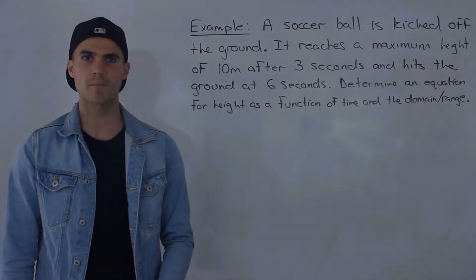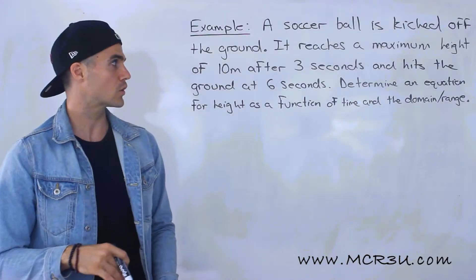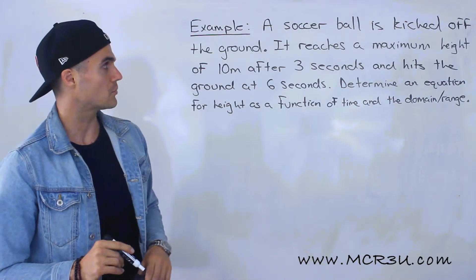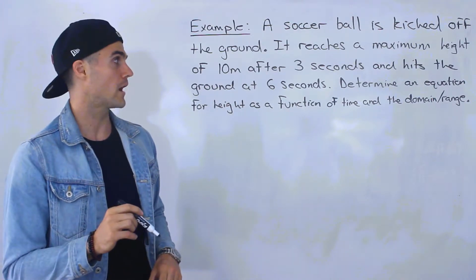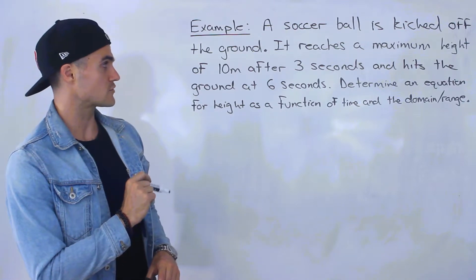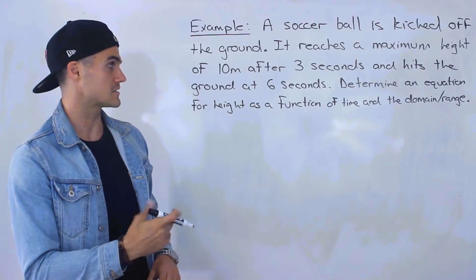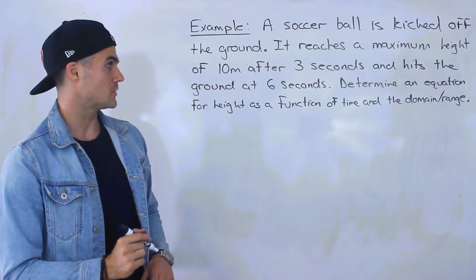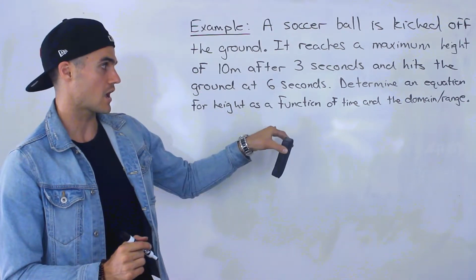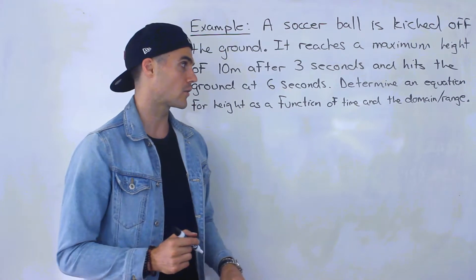Welcome back. Patrick here, and in this video we're going to do this example. A soccer ball is kicked off the ground. It reaches a maximum height of 10 meters after 3 seconds and hits the ground at 6 seconds. We need to determine an equation for height as a function of time, and find the domain and range.